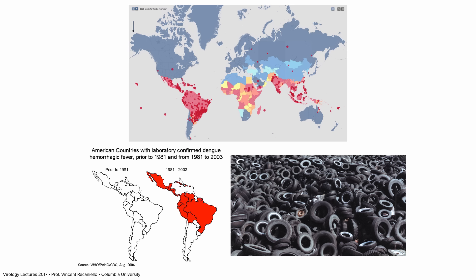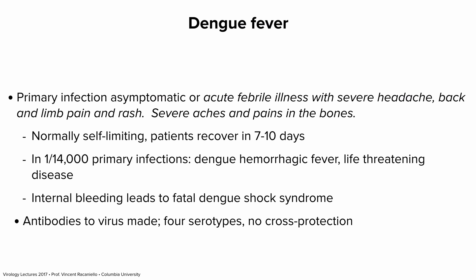The current range of dengue shown on a map includes essentially all tropical regions. In some places like the north-central US there are no Aedes aegypti, but there are imported cases. Some vaccines have just been developed to deal with it. Dengue fever can be asymptomatic or cause an acute febrile illness with headache, back and limb pain, rash, and bone pain — usually self-limiting. But in 1 in 14,000 infections you get dengue hemorrhagic fever: capillaries break, you hemorrhage, and can die from shock due to massive fluid loss.